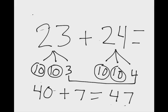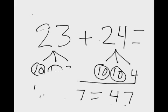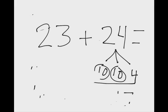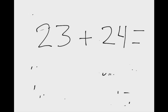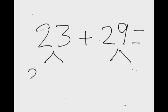The next example is two numbers that we would normally have carried in the past. So instead of adding 23 plus 24, let's try adding 23 plus 29. Again, we can decompose this number into tens and ones. So this would be 20 and 3 again. And this would be 20 and 9.